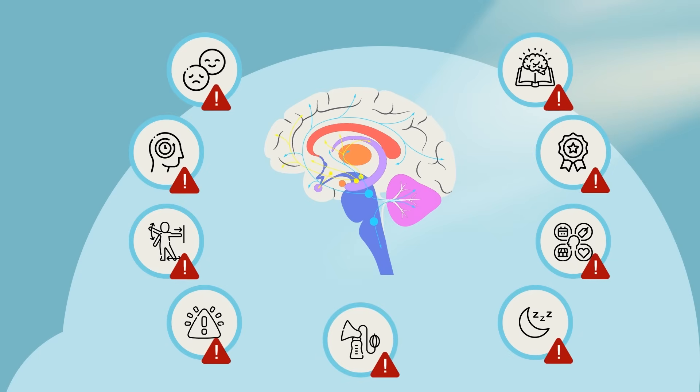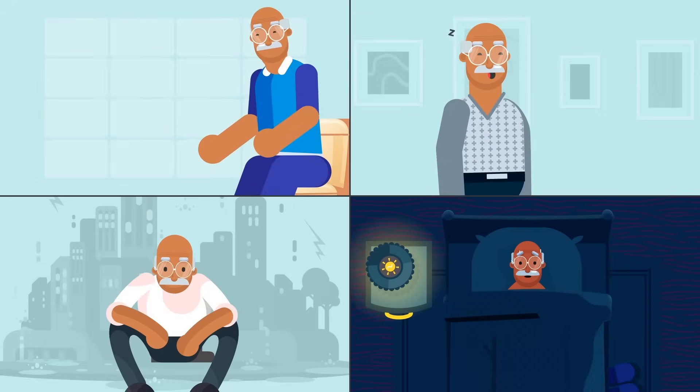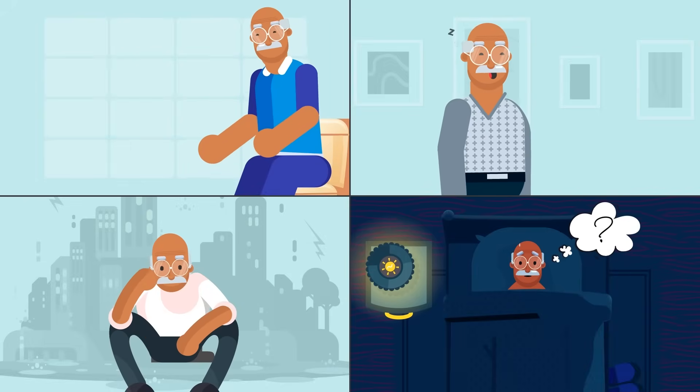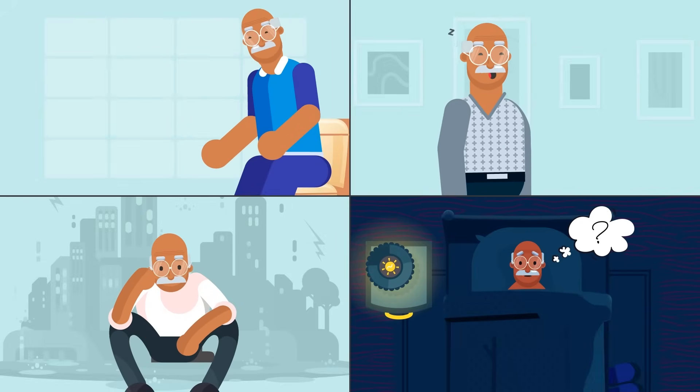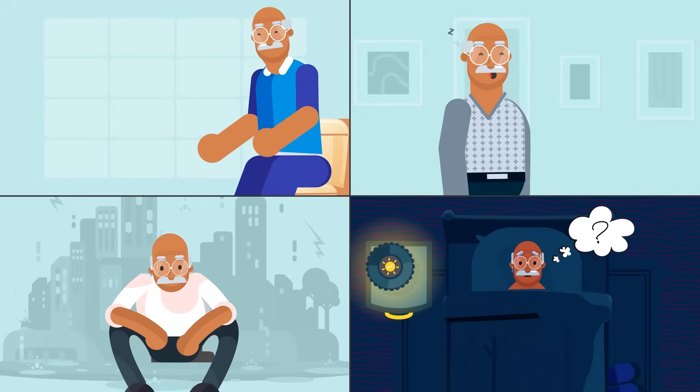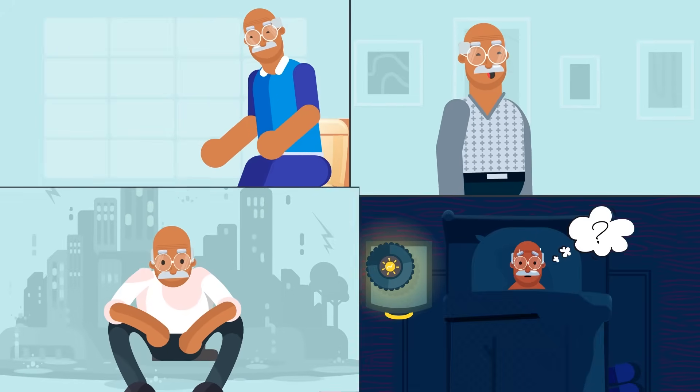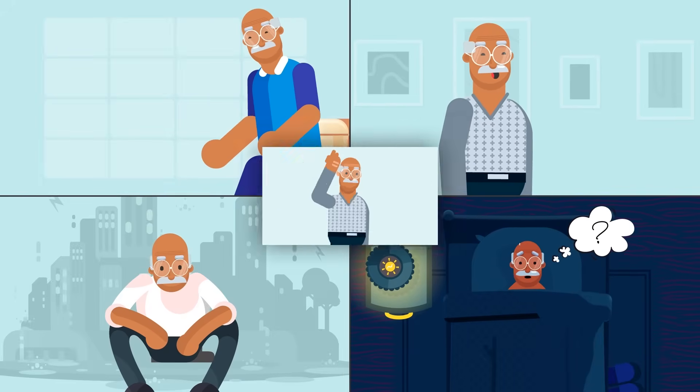The lack of dopamine caused by brain cell loss impacts these functions. While motor symptoms are the most noticeable to others, many people with Parkinson's also experience constipation, cognitive changes, depression, insomnia, and dementia.